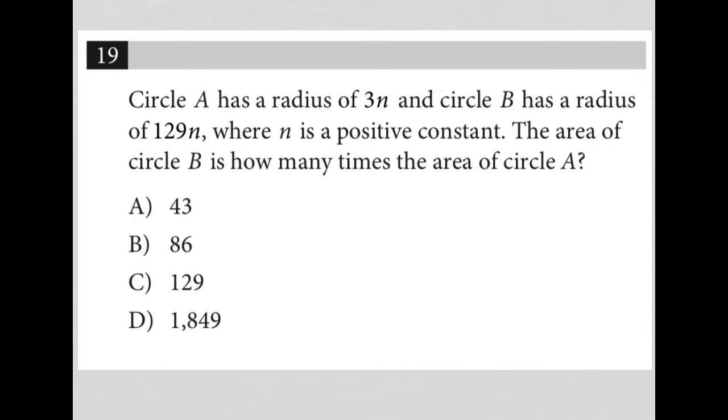This question says circle A has a radius of 3n. So I'm going to write down A: 3n. Let's do it like this. And circle B has a radius of 129n. So B: 129n. This is radius.